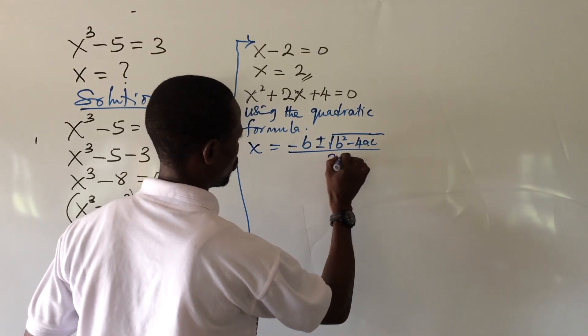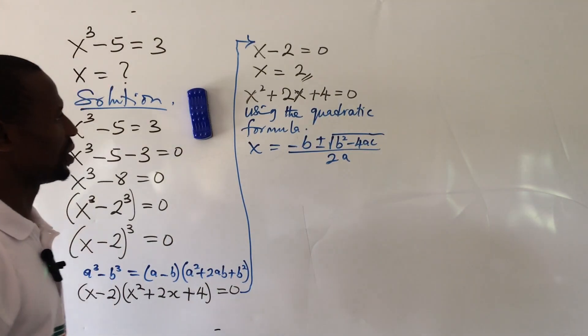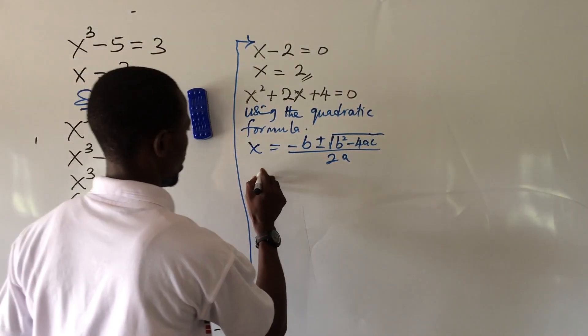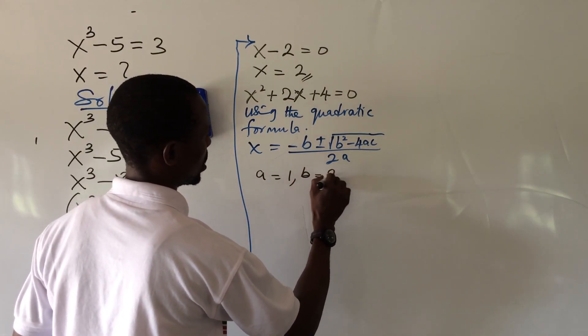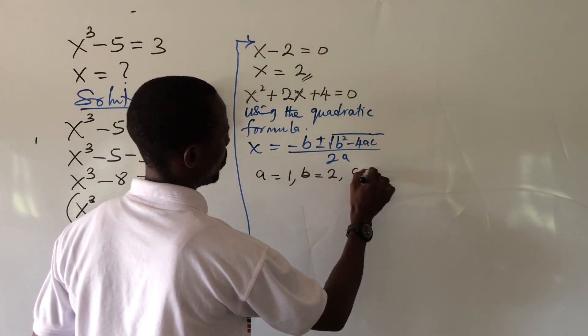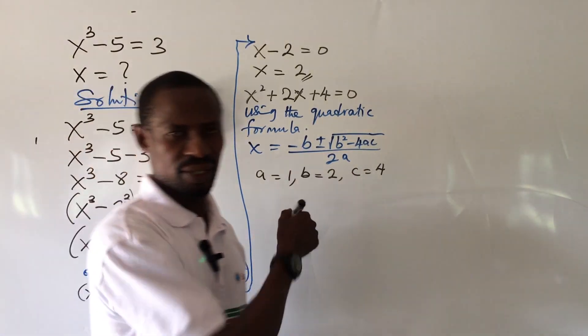All over 2a. Let's go ahead and bring out our a, b, and c from here. Our a equal to positive 1, b equal to positive 2, and c equal to positive 4. Let's substitute this into this expression now into the formula.